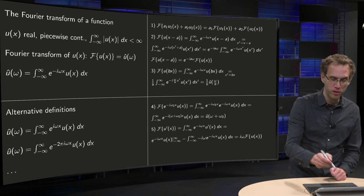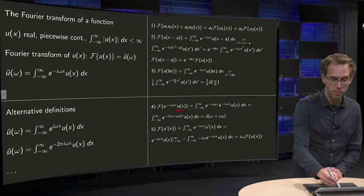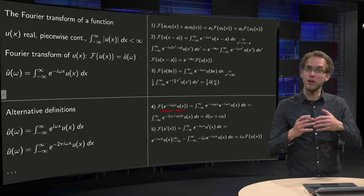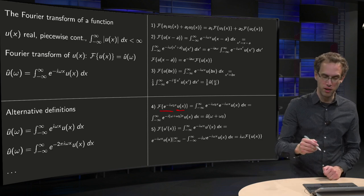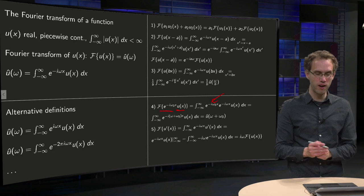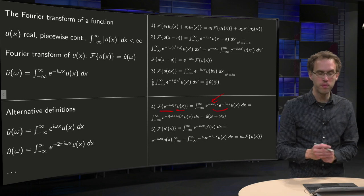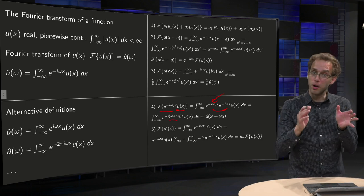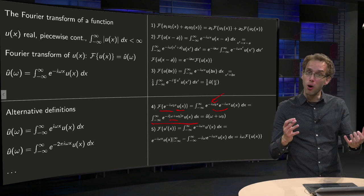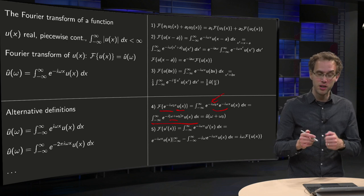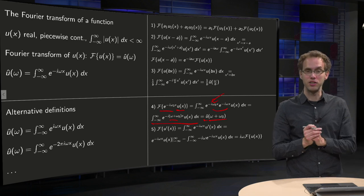Then the fourth rule: what happens if you know the Fourier transform of u, but now you have another function e to the power of i omega-naught x times u? Then you can also easily express the Fourier transform of this new function in terms of the old one. Using the definition, you get an additional factor, and you can combine the exponents into e to the power of minus i times (omega plus omega-naught) times x. Then you see you have exactly the Fourier transform of u, but with omega replaced by omega plus omega-naught. So you get u-hat of omega plus omega-naught.